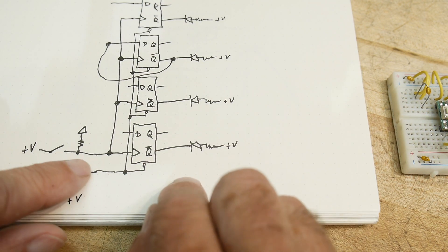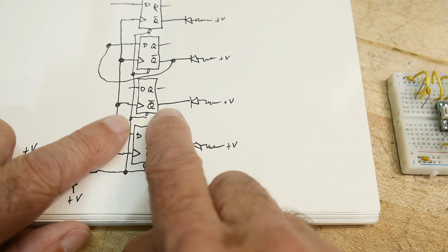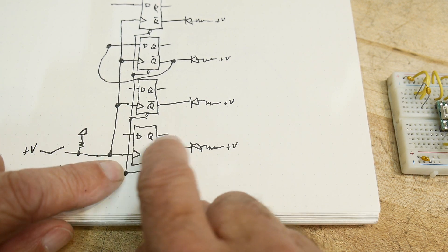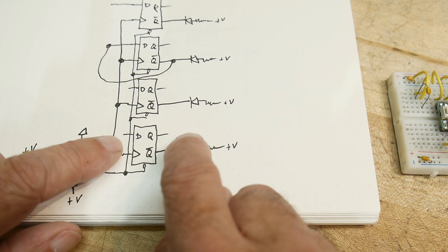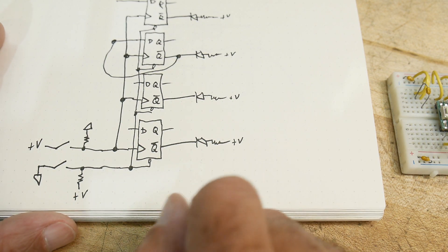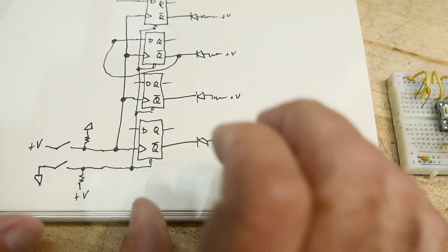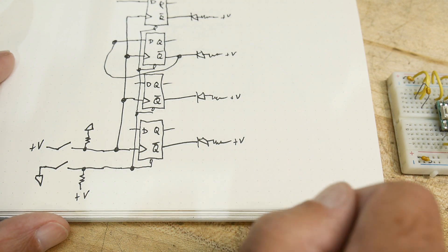So, if it were a transparent latch, if the clock went high, then D could toggle up and down and Q would follow it. It would just be like having a short between D and Q. But this is not one of those. This is not a transparent latch. This is an edge-triggered latch. So, the Q only changes state on the rising edge of the clock pulse.